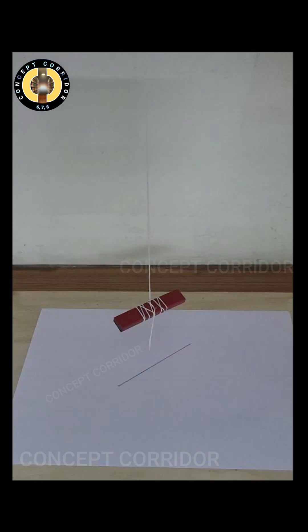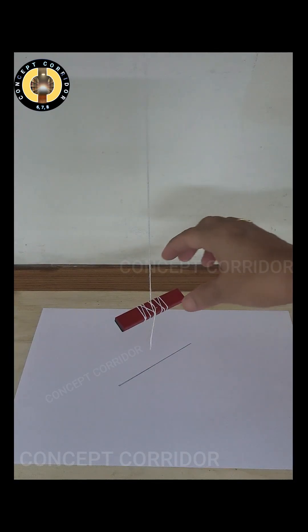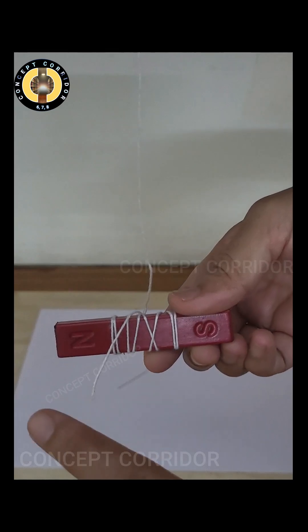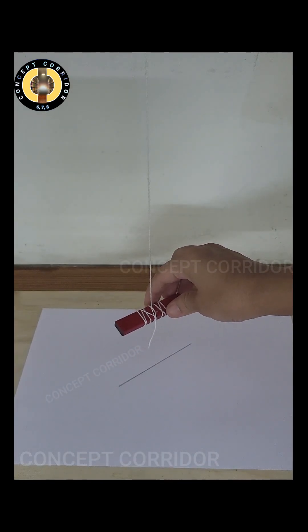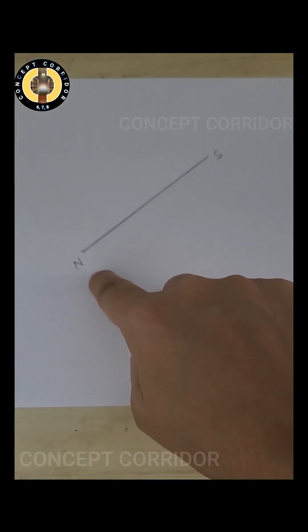You can see we have got all three lines in same direction. Now check out the poles of this magnet. This was the north pole and here the south pole and this way it was aligned. I have marked here north and south.